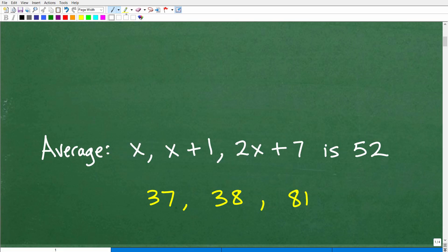All right, so we have the average of these three mystery numbers, x, x plus 1, 2x plus 7. And we just know that the average of these three numbers is 52. What are the numbers? Here they are right here, 37, 38, and 81.